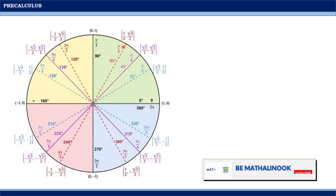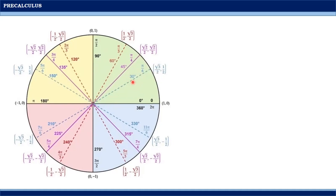Notice in this diagram that the coordinates of other angles are based on these three angles. Specifically, 30 degrees has the same coordinates as 150 degrees, 210 degrees, and 330 degrees. Looking at their numerical coordinates, notice that they are all the same — they just vary in signs depending on what quadrant they are located in.